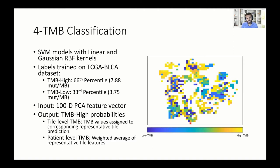Then we perform TMB classification using support vector machine models with either linear or Gaussian radial basis function kernels. We use labels from the TCGA dataset, using the 66th percentile (7.8 mutations per megabase) as TMB-high and the 33rd percentile (3.75 mutations per megabase) as the low cutoff. We input the 100-dimensional feature vectors and receive two types of outputs: tile-level predictions assigned from exemplars to corresponding cluster tiles, and patient-level TMB by averaging tile feature vectors weighted by cluster size.